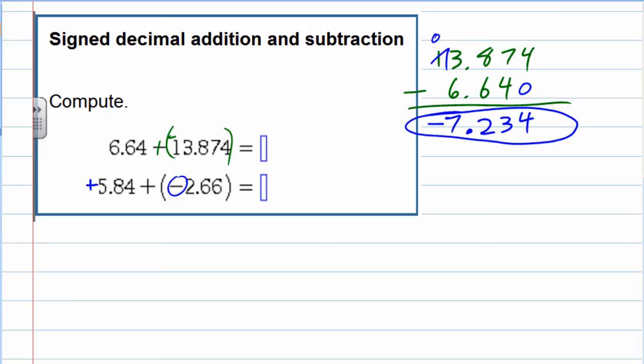So I write the larger one on top, 5.84. Smaller one on the bottom, 2.66. Decimals are lined up so I can subtract.